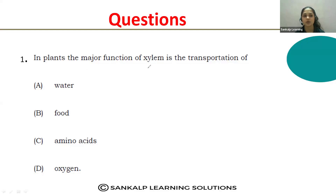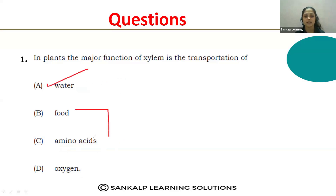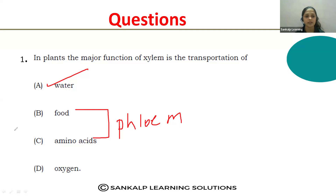The first MCQ question: In plants, the major function of xylem is the transportation of — option A: water, option B: amino acids, option C: food, option D: oxygen. You know that xylem helps for the transportation of water. Food and amino acids are transported through the phloem, and oxygen is exchanged through the stomata. So option A, water, is the correct answer.